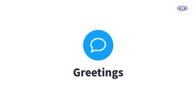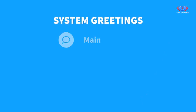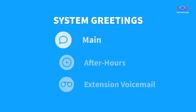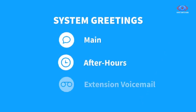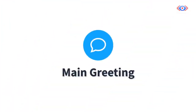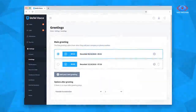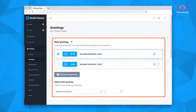Give your customers the right impression with professional greetings. Your Unitel Voice virtual phone system has three greeting types: your main greeting, your after-hours greeting, and your extension voicemail greetings. Each employee and department extension has its own voicemail greeting. Your main greeting is the recording your customers hear when they first call your business. Navigate to Settings and Greetings to manage your main greeting.